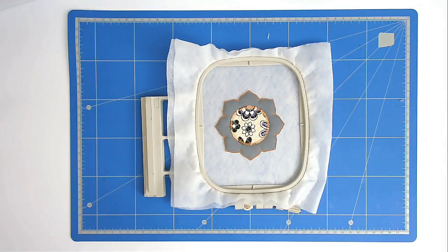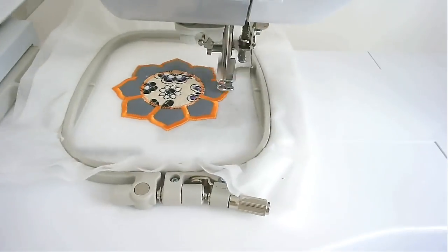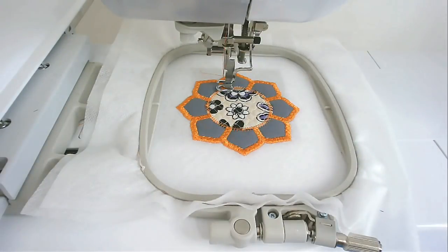I'm now going to put that back into my machine and stitch round number seven, and that's going to do the satin stitching around the petals. Next is round number eight, and that's going to do the satin stitch around the edge of the circle.